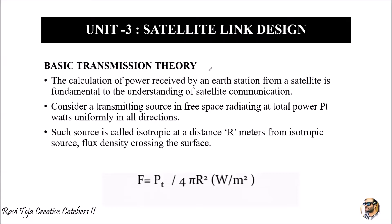Now consider a transmitting source in free space — let's say a satellite trying to transmit signals in various directions. Consider a source radiating a total power Pt, where Pt is the total power in watts, uniformly in all directions. This particular source is called an isotropic source.